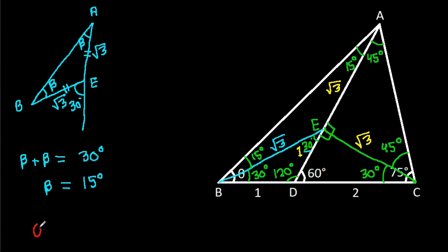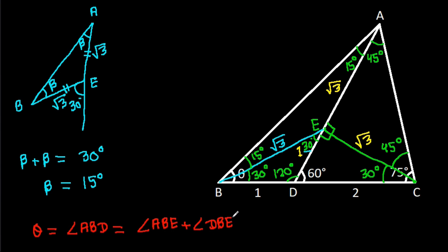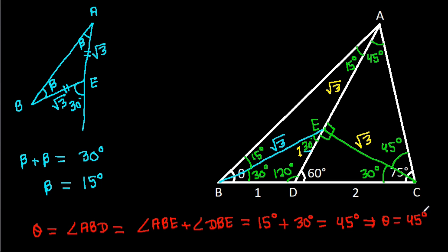And theta is angle ABD, which equals angle ABE plus angle DBE, and it is 15 degrees plus 30 degrees, that will be 45 degrees. So theta is 45 degrees.